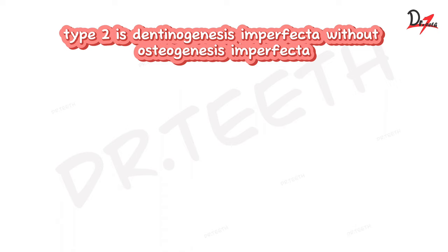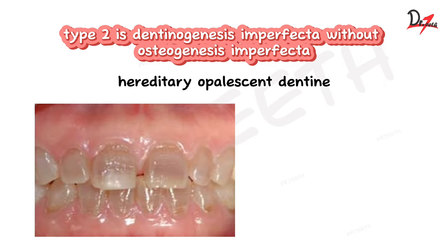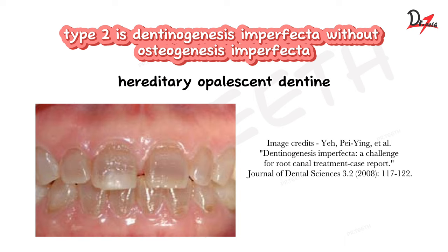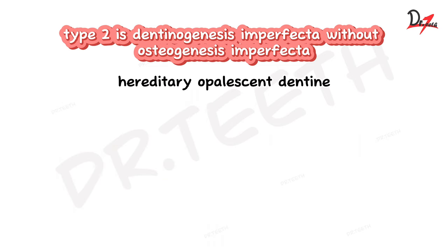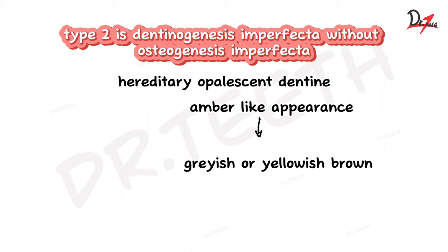Type two is Dentinogenesis imperfecta without Osteogenesis imperfecta, so there is no bone defect. It is also known as Hereditary Opalescent Dentine. When the tooth erupts, it has an opalescent amber-like appearance, meaning it is yellowish in color. Later in the patient's life, it becomes grayish or yellowish-brown and continues to darken with a bluish reflection.